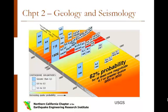An earlier version of this figure, nicknamed the Tombstone Diary, was included in the 1995 chapter on geology and seismology. This updated diagram illustrates the high seismic activity in the Bay Area prior to the 1906 earthquake. As you can see, there were 16 earthquakes exceeding magnitude 6.0 between 1836 and 1906. After the 1906 earthquake, seismic activity dropped dramatically because the stress was reduced on all of the faults in the region.